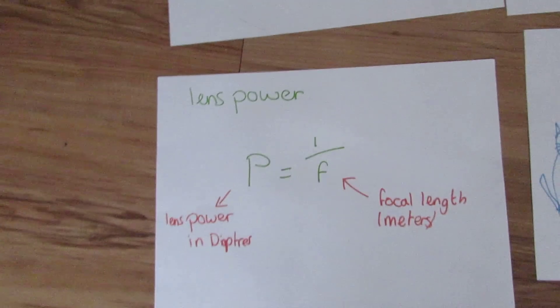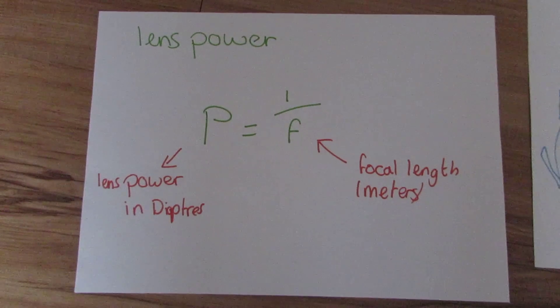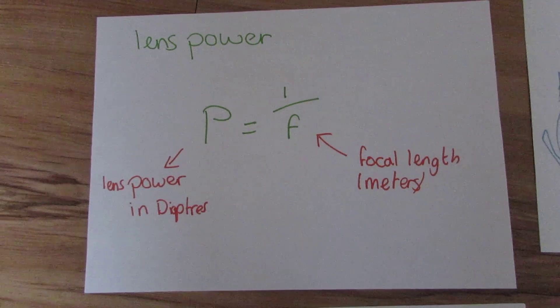Now, our equation for this is simply P, which is our lens power in diopters, is equal to 1 over F, which is our focal length in meters.